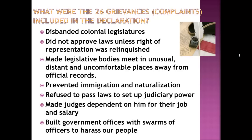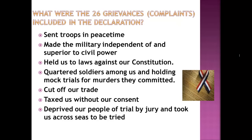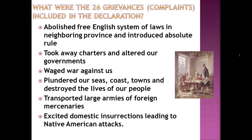I won't read all 26 grievances, but you may view them on the next three slides. I will however point out and read a select few from each slide. The Declaration cited the disbanding of colonial legislatures, the demand that the colonists give up the right of representation, the prevention of immigration and naturalization, the refusal to pass laws or appoint judges without making the judges dependent on the king to be paid. Troops were sent to the colonies in peacetime and raised in power above the civil governments. Laws were passed that violated the colonies' own constitutions, and taxation continued as well as a cutting off of colonial trade. Charters were taken away and war was waged against the colonies, including encouraging the Native Americans to attack and abolishing the free system of English laws by introducing the idea of absolute rule in the colonies.